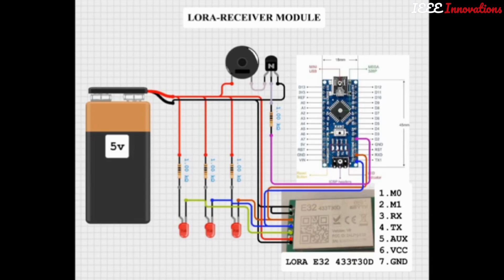This is the receiver module. The circuit remains the same. You can connect M0 and M1 to ground to make this mode zero. Again, RX to RX you need to connect.